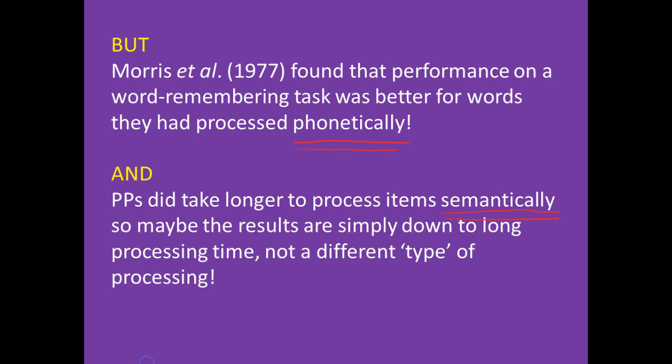But then Morris et al. did a similar experiment in 1977. They found that words that had been processed phonetically were best remembered — which is exactly the opposite of what the Levels of Processing framework would predict. Participants did take longer to process items semantically, so maybe the results are just down to a longer processing time rather than a different type of processing.